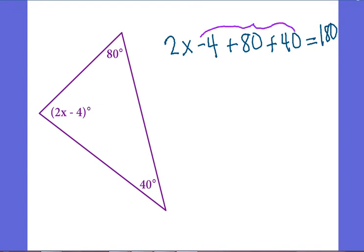First of all, we want to combine like terms. I still have this 2x here, but when I add 80 and 40 together, I get 120. Then I'm going to subtract 4 from that. I have a positive 116. That still has to equal 180.